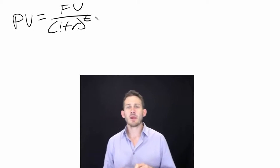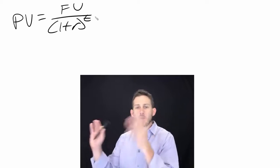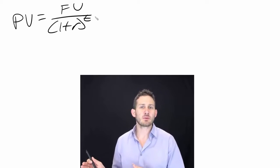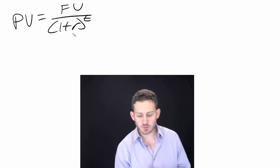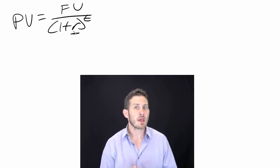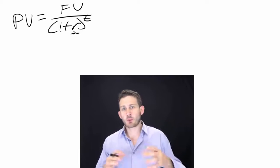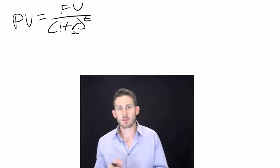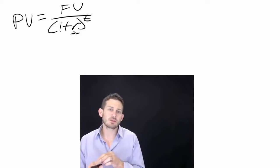Basically what we have here is that we're looking at that future value, that future cash flow we're going to receive, and then we are using our discount rate, which is that r, and then we are bringing it back to a present value.